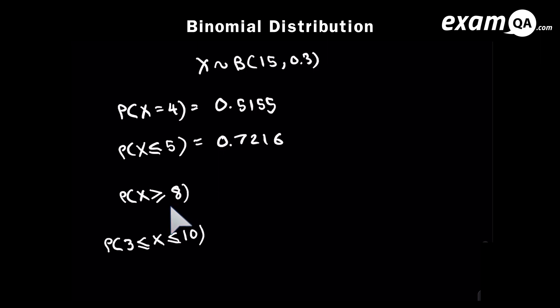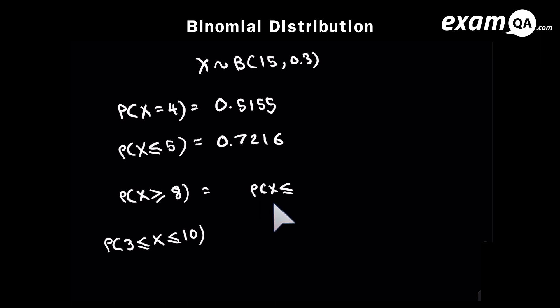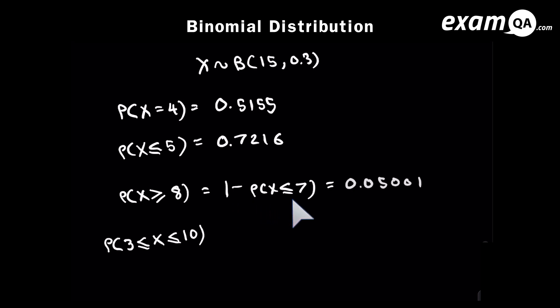The next one is tricky because it says X is more than or equal to 8. This is a cumulative question, so binomial CD, but your calculator only works out less than or equal to. If you put X as 8, it works out P(X ≤ 8), which is not the same as P(X ≥ 8). P(X ≥ 8) means you want 8, 9, 10, 11, 12, 13, 14, and 15 successes. So think about what you don't want: 7 and below. P(X ≤ 7) is everything you don't want, so 1 minus P(X ≤ 7) gives P(X ≥ 8).